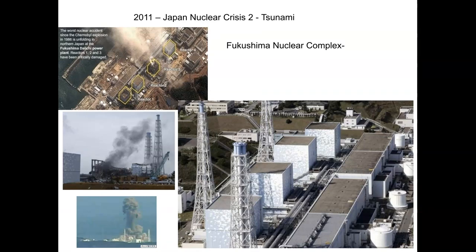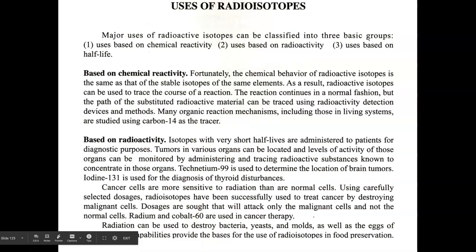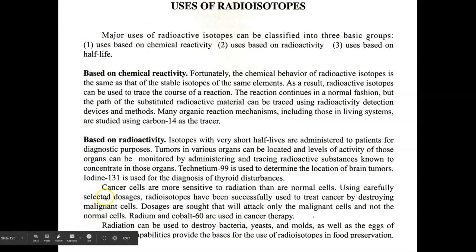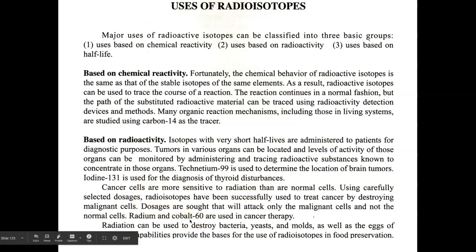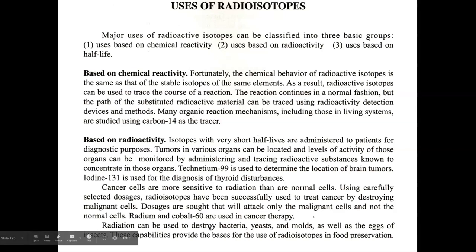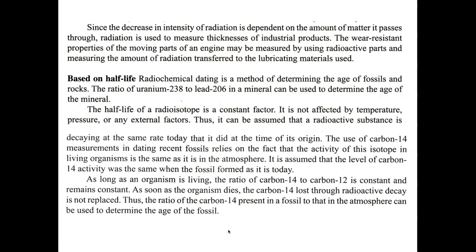We also talked about the Fukushima nuclear power plant meltdown in 2011 — that was a fission event. Now, some uses of radioisotopes: carbon-14 can be used as a tracer in living things; technetium-99 is used to determine the location of brain tumors; iodine-131 is used to diagnose thyroid disturbances; cobalt-60 is used to treat cancer cells. Radiation isn't always bad — we can use it to destroy bacteria, yeast, and molds, disinfecting materials in our society.